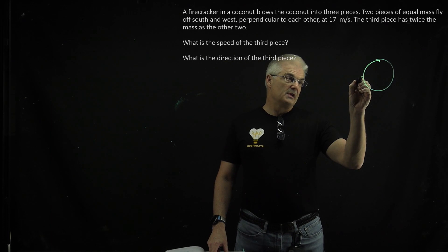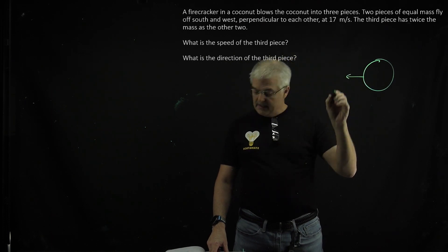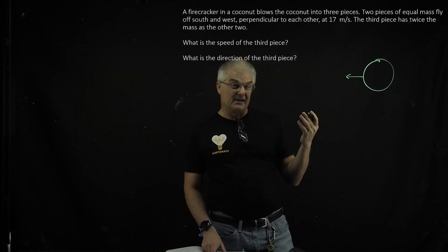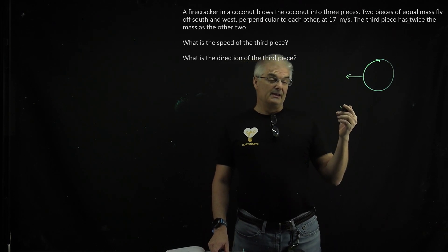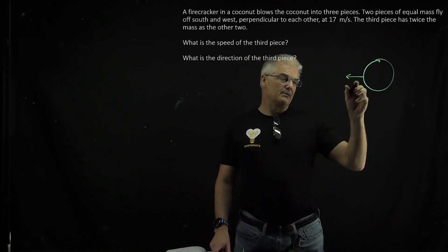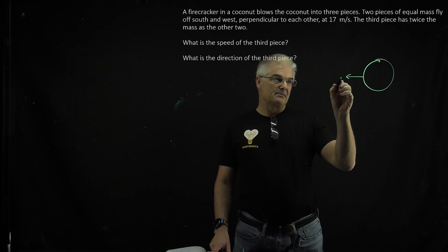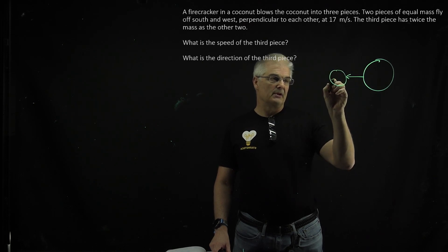The first piece comes out of it, and it has a mass. It just says identical masses, and then the other one is a mass of two. So I'm going to say the identical mass is a mass of one. So the first part of the coconut weighs one kilogram. I'm just going to make that up.